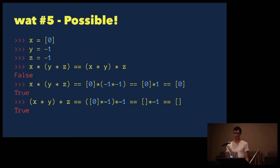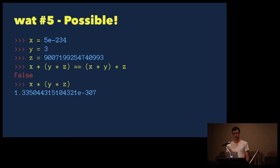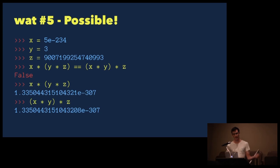There's actually one other way to satisfy this: if we set x, y, and z equal to some very specific numbers, we can exploit how Python handles floating-point numbers, and the result of the multiplication is off by just the tiniest least significant bit. Floats are not always exactly what they seem.